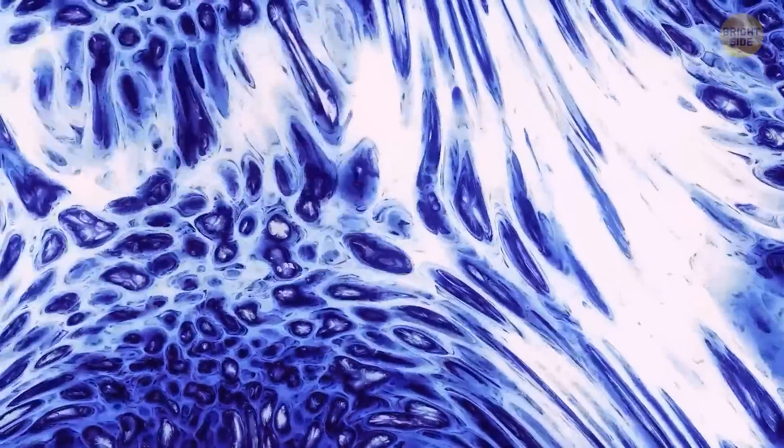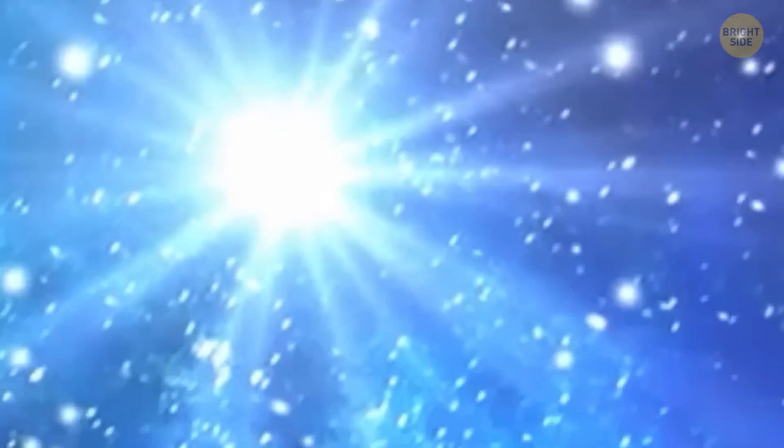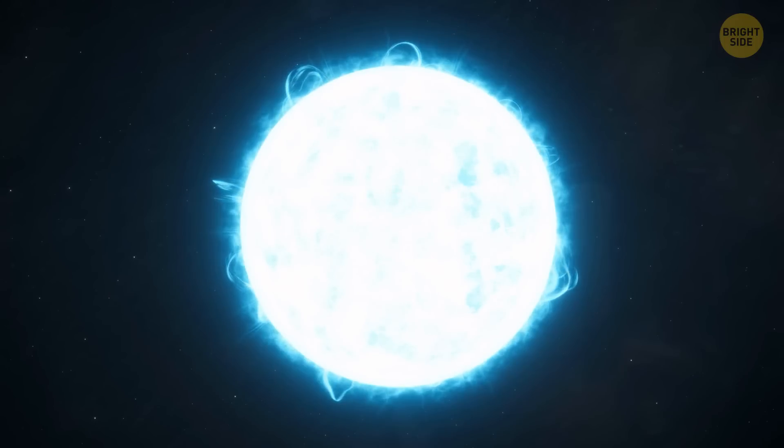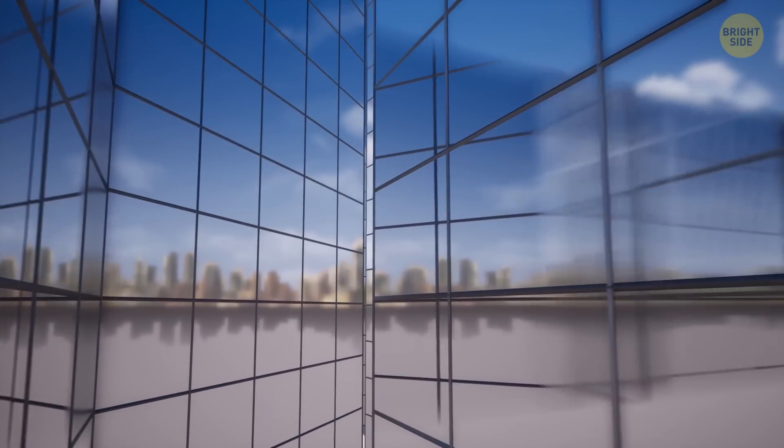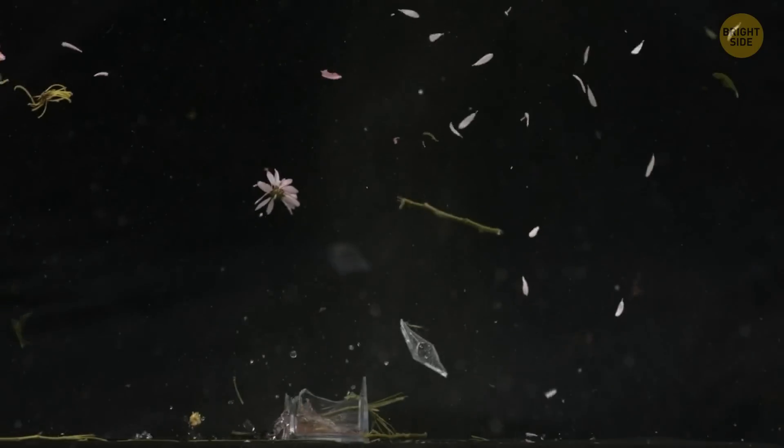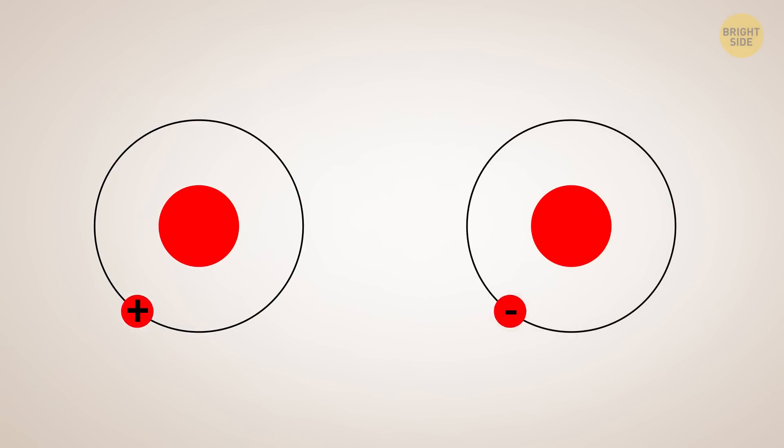But, the most important question is, what would this mysterious universe made up of antimatter look like? You may imagine a universe where everything is flipped. The stars shine with an eerie blue light instead of yellow. Buildings are made of glass that reflects light in the opposite direction. And laws of physics work in the opposite way. After all, antimatter has the opposite charge of normal matter. So, isn't that logical? However, it's not that simple.